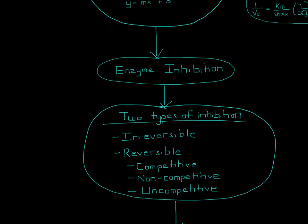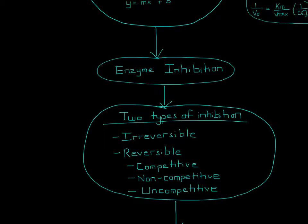Let's talk about enzyme inhibition. There are two types of inhibition: one is irreversible and the other is reversible. There are three categories of reversible inhibition: competitive, non-competitive, and uncompetitive.